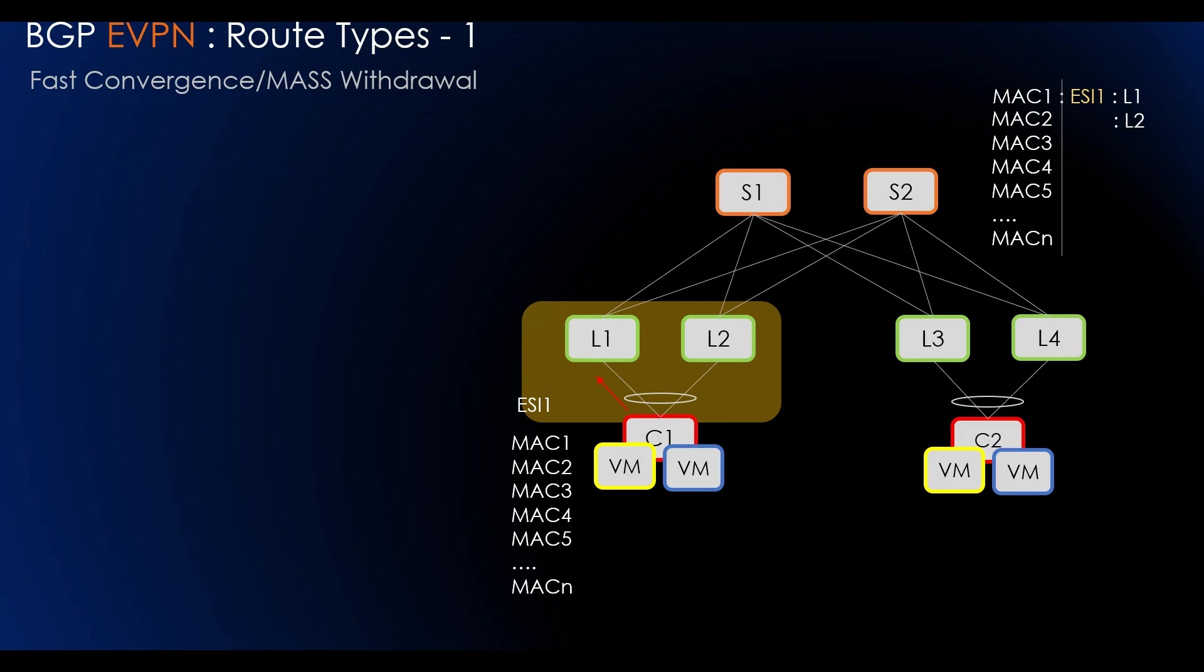Now we'll see the feature of fast convergence or mass withdrawal. In EVPN, MAC address reachability is learned via BGP control plane over the MPLS or VXLAN network. In absence of a fast convergence mechanism, the network convergence time is a function of the number of MAC IP routes being withdrawn by the PE encountering a failure. For highly scaled environments, this scheme yields slow convergence. EVPN defines a mechanism to efficiently and quickly signal to the remote PEs the need to update their forwarding tables upon occurrence of any failure in the connectivity of the Ethernet segment.